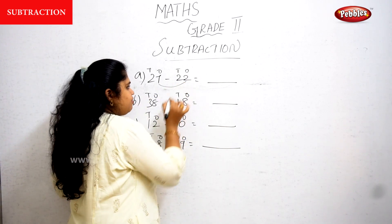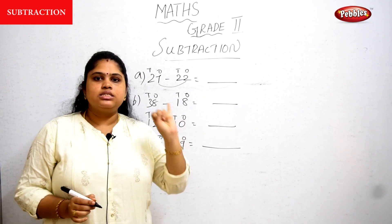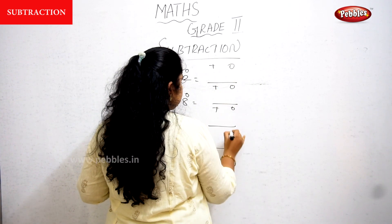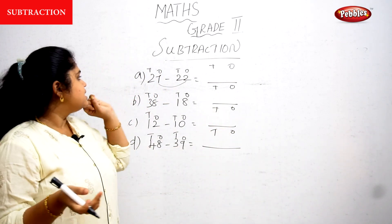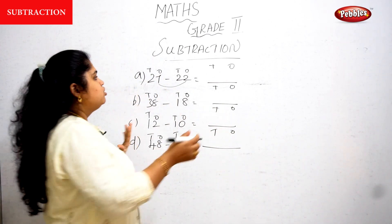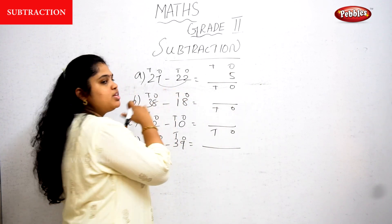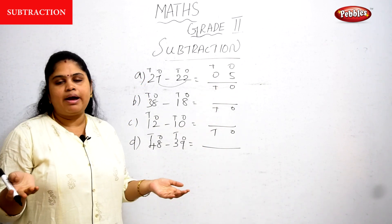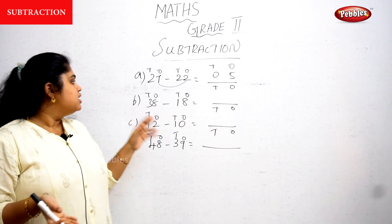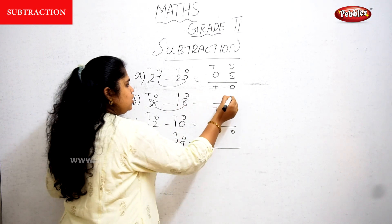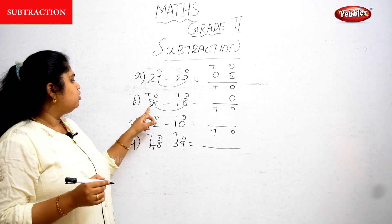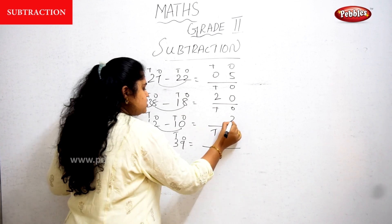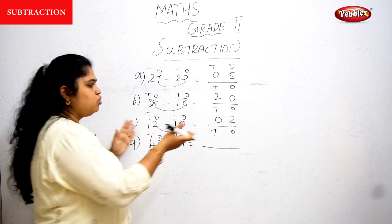First, the ones will be subtracted. For 27 minus 22: 7 minus 2 in the ones column — backward counting: 6, 5, 4, 3, 2. So 5 in the ones. Then 2 minus 2 in the tens — the same number means the answer is 0. So the answer is 5. For 38 minus 8: 8 minus 8 is 0; 3 minus 1 is 2, so 20 is the answer. For 12 minus 10: 2 minus 0 is 2; 1 minus 1 is 0. So the answer is 2.